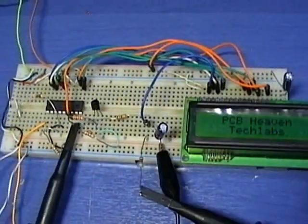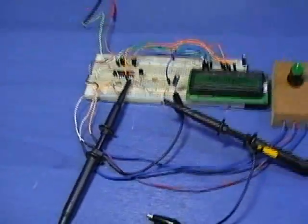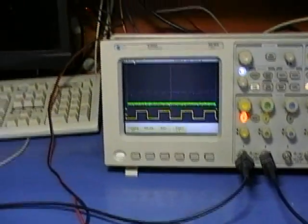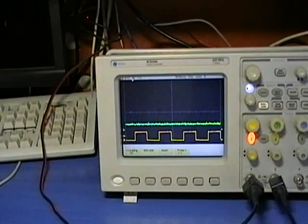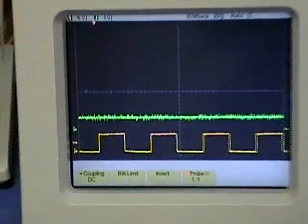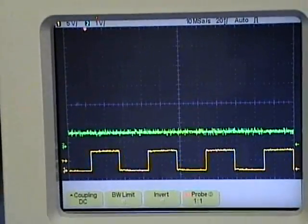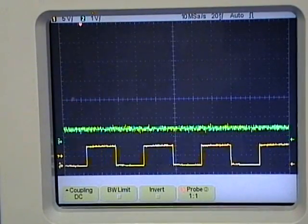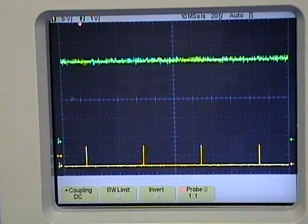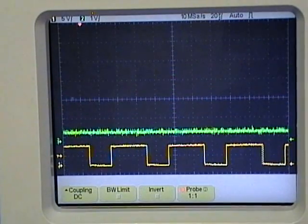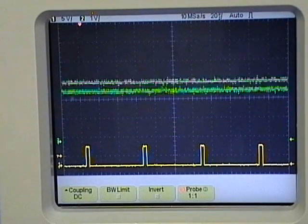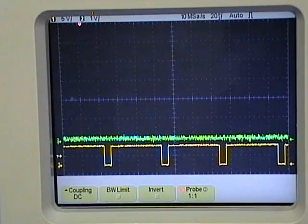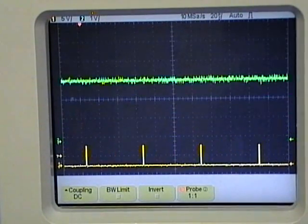I have connected the oscilloscope for you to see how this filter works. The yellow channel shows the PWM pulses from the microcontroller output, and the green channel is connected at the output of the filter. Watch now how the voltage level changes according to the PWM duty cycle. This voltage can now be used to adjust the contrast of the LCD.